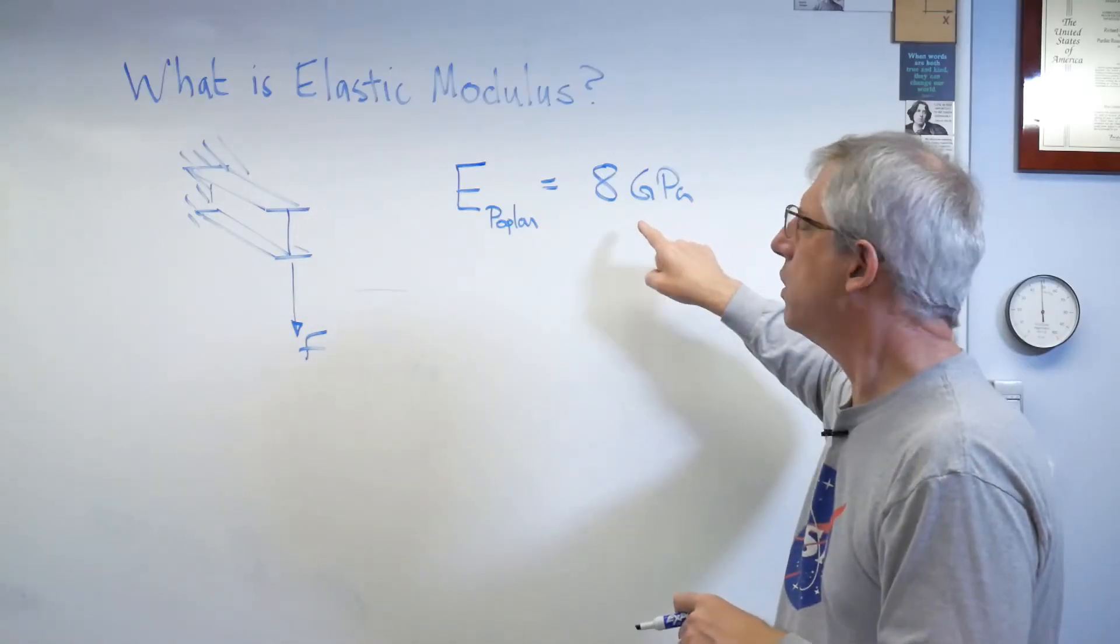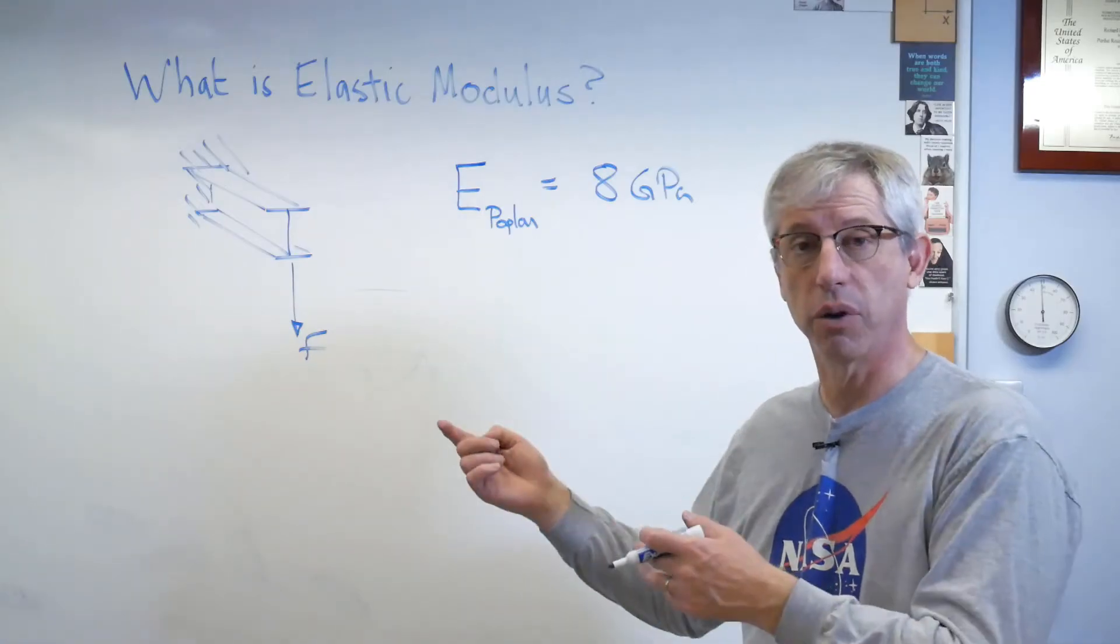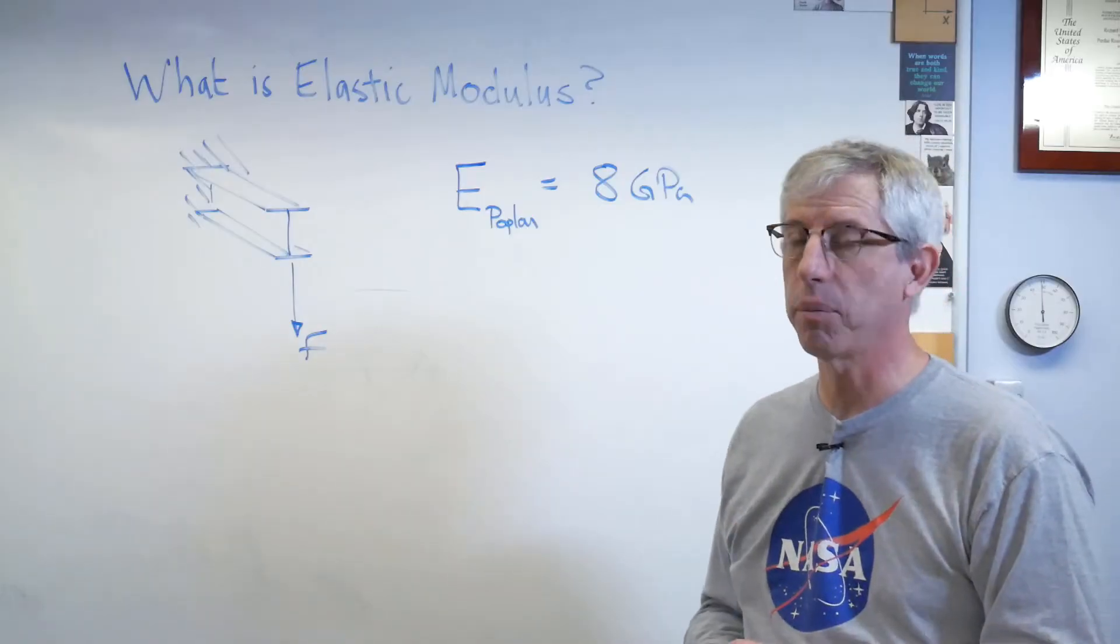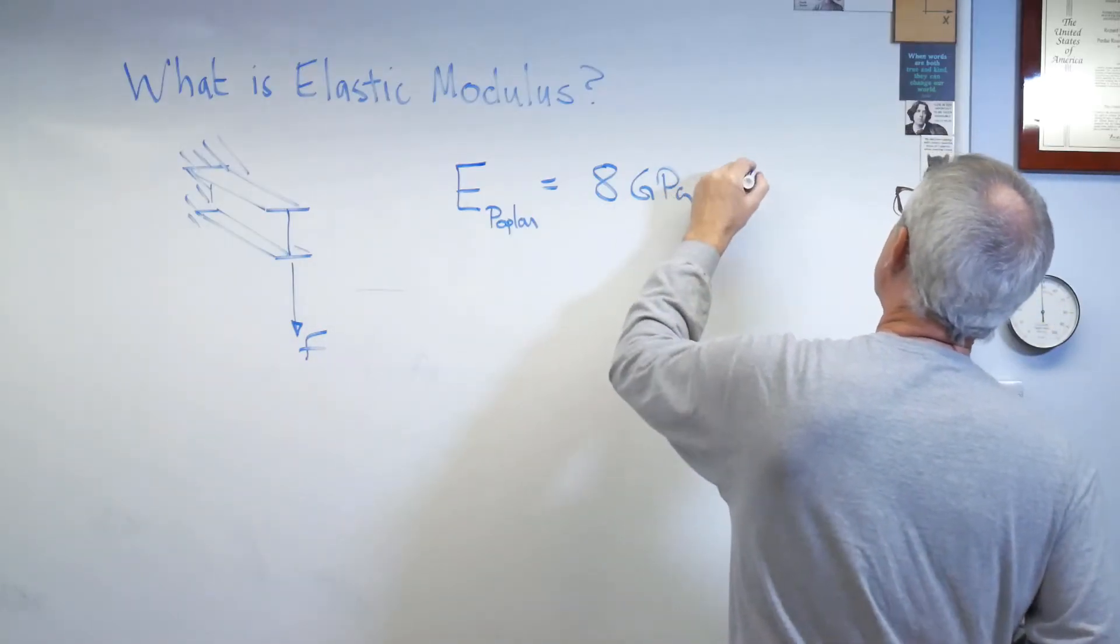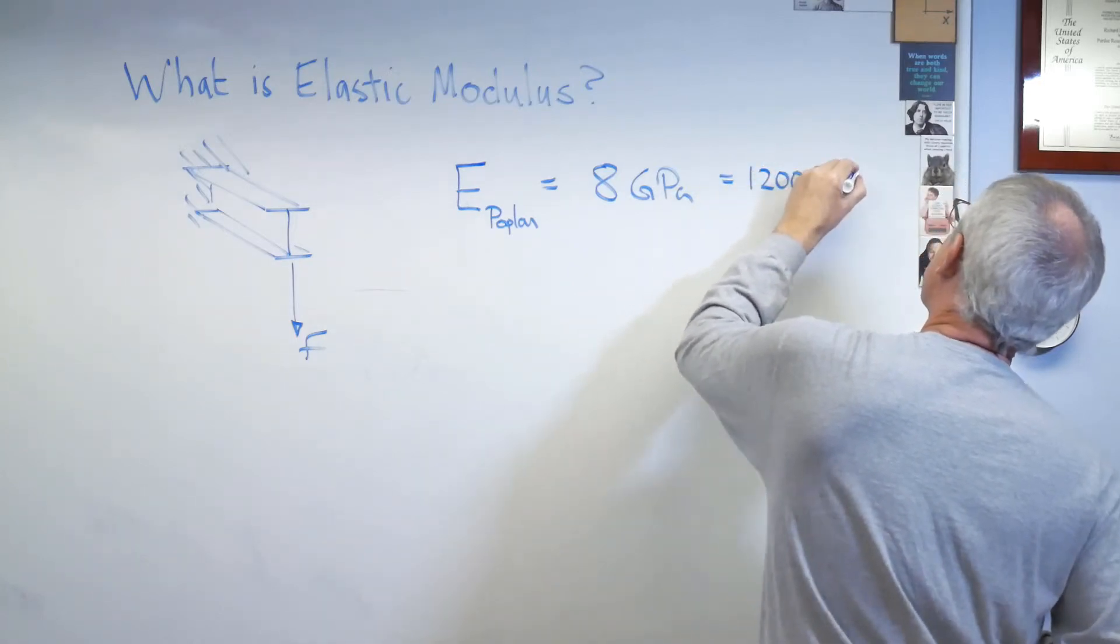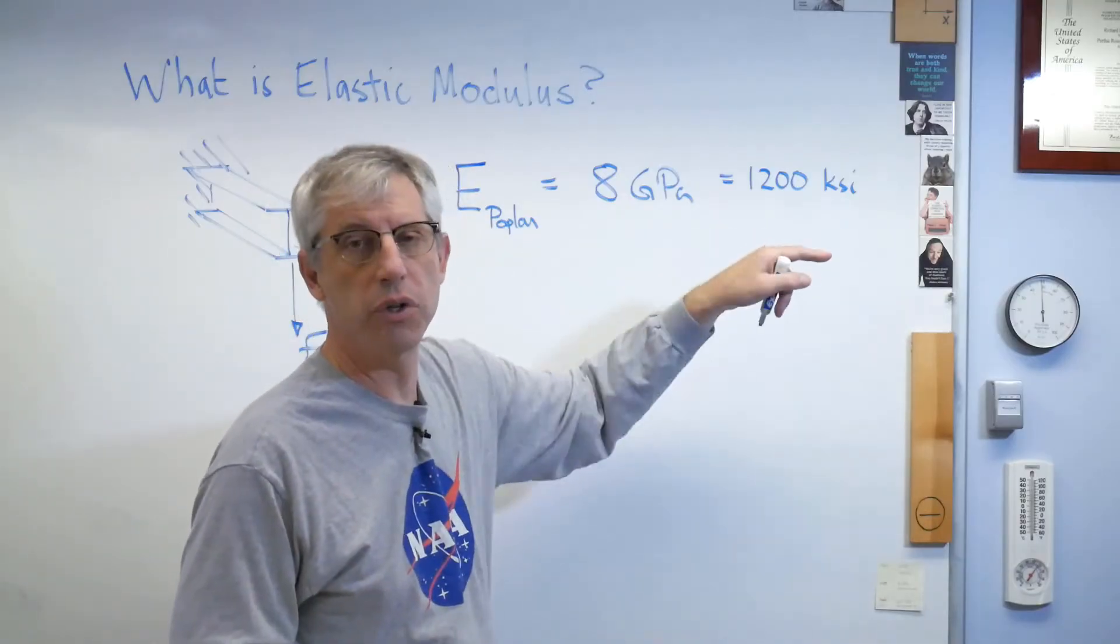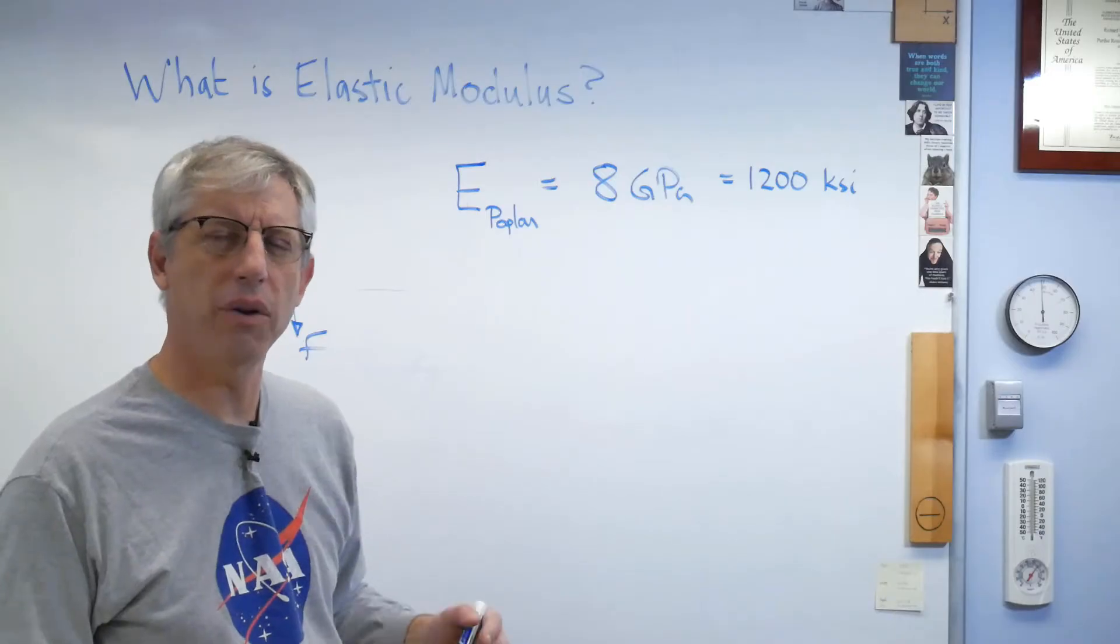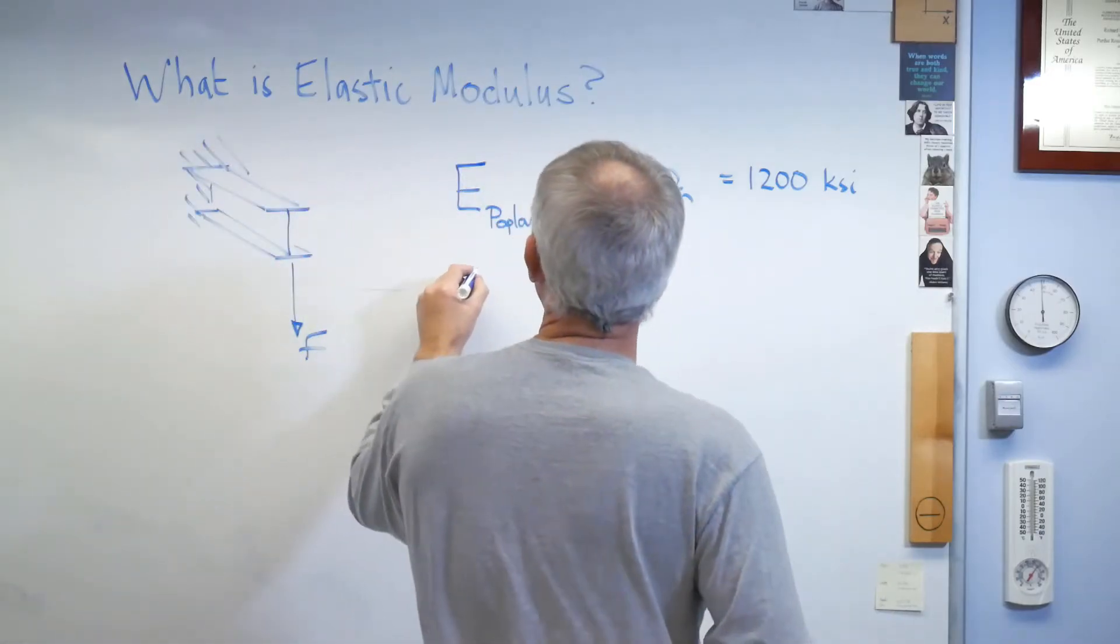So, the elastic modulus of poplar in metric units is about 8 gigapascals. Now, I say about because all trees are different. The one on MatWeb listed as 8 gigapascals. That's a big number. It's 8 billion pascals and also it's pascals. Why is it in units of pressure? Well, it's in units of force over area because that's the units of stress. I mean, we're on the stress strain curve. So, this isn't really pressure, but it does have units that look like pressure. In English units, it's about 1.2 million psi. And you usually see this written as KSI. So, it's 1.2 million pounds per square inch. Big number, but it only makes it, only matters in comparison to the other materials.